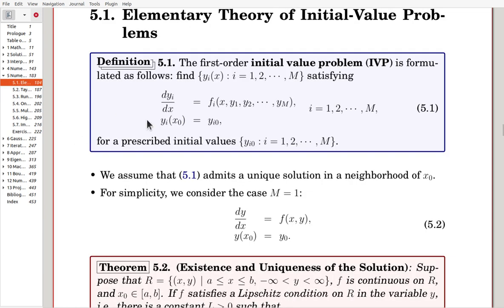Let's go to Section 5.1, Elementary Theory of Initial Value Problems. The first order initial value problem is formulated as follows: find yi, i from 1 to m, just m functions satisfying these equations.